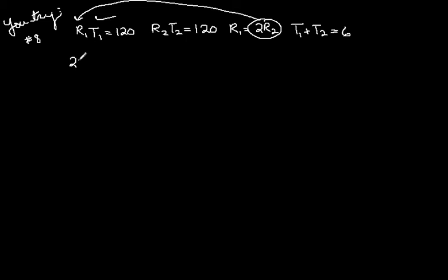So, we get 2R2 times T1 equals 120. Now, let's get rid of this T1. We have to solve this one. T1 equals 6 minus T2. So, we get 2R2. T1 is 6 minus T2.